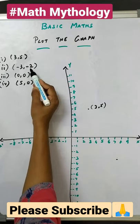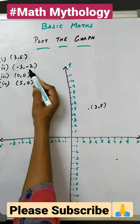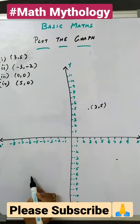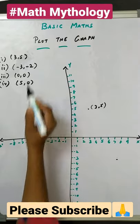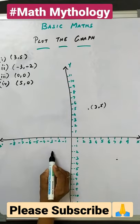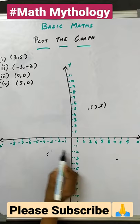The next point is minus and minus. Both are negative, so it lies in the third quadrant. Your x value is minus 3 and your y value is minus 2. So we get the meeting point of these two is here.